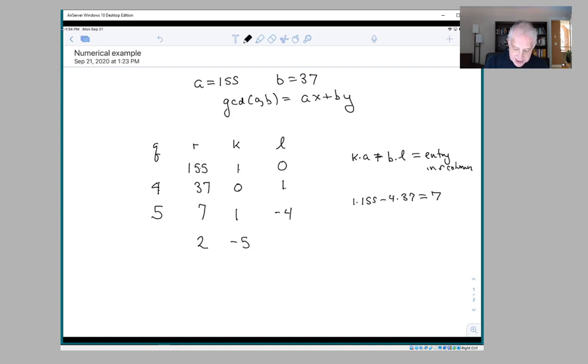1 minus 5 times minus 4 is 21. Minus 5 times 155 plus 21 times 37 does work out to be 2. It's always supposed to equal this entry.